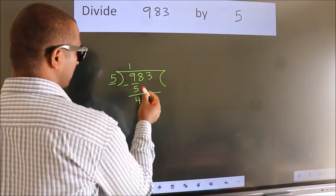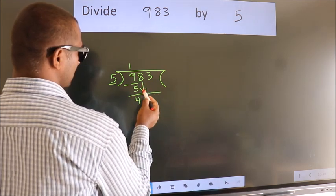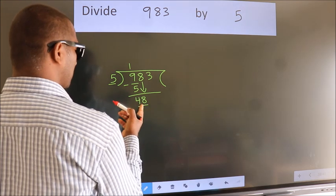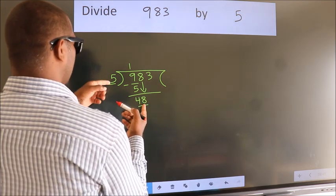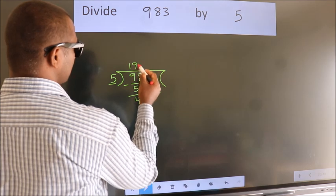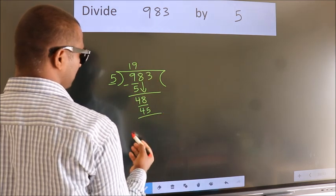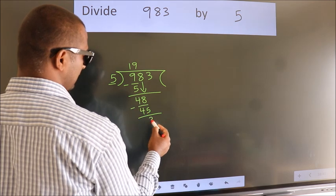After this, bring down the next number, so 8 comes down. So 48. A number close to 48 in the 5 table is 5 nines, which is 45. Now we subtract and get 3.